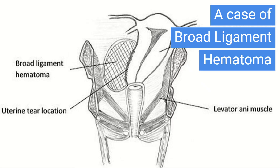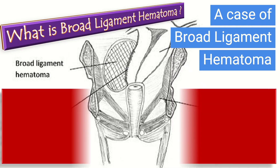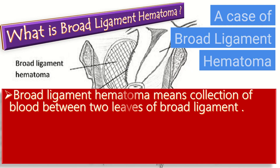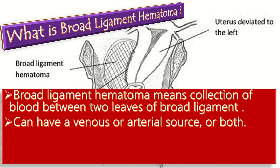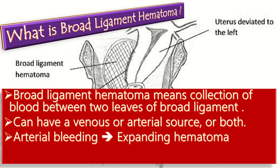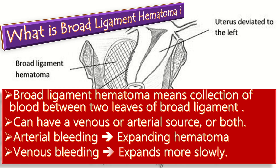Broad ligament hematoma means collection of blood between the two leaves of the broad ligament. It can have a venous or arterial source, or even both. Arterial bleeding usually results in a rapidly expanding hematoma, while venous bleeding typically expands more slowly.